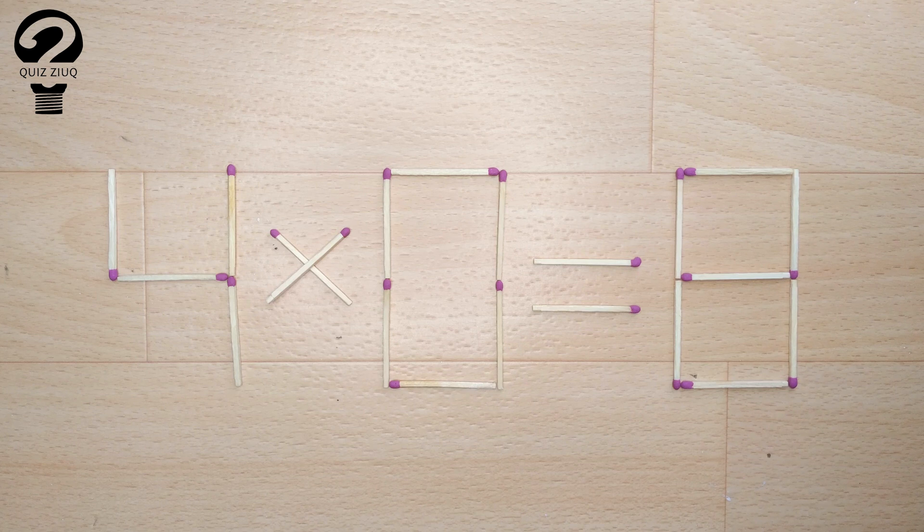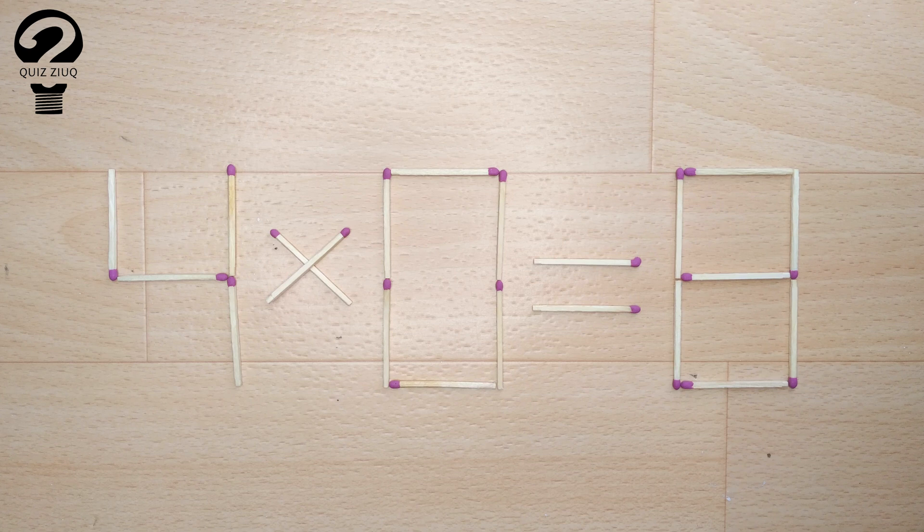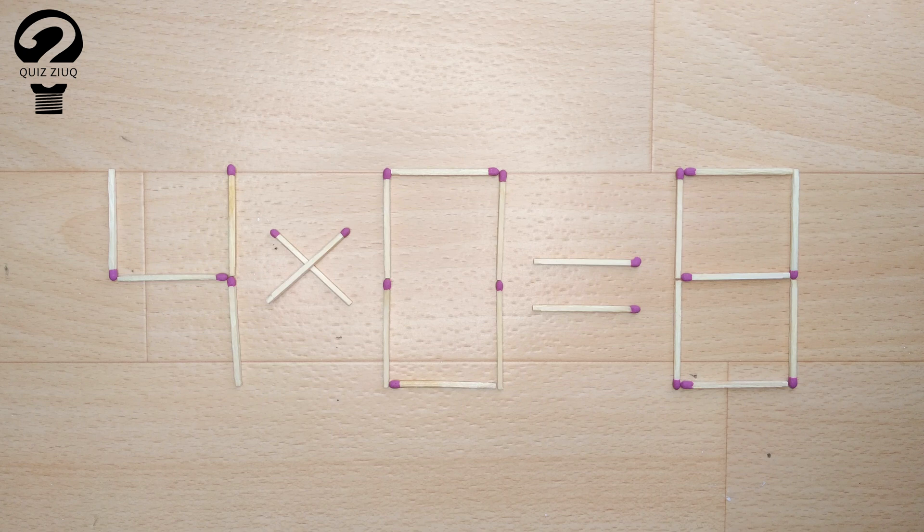Here's the next puzzle. We have this equation: 4 times 0 equals 8. Our equation is incorrect, and we need to move two matches to make our equation correct.